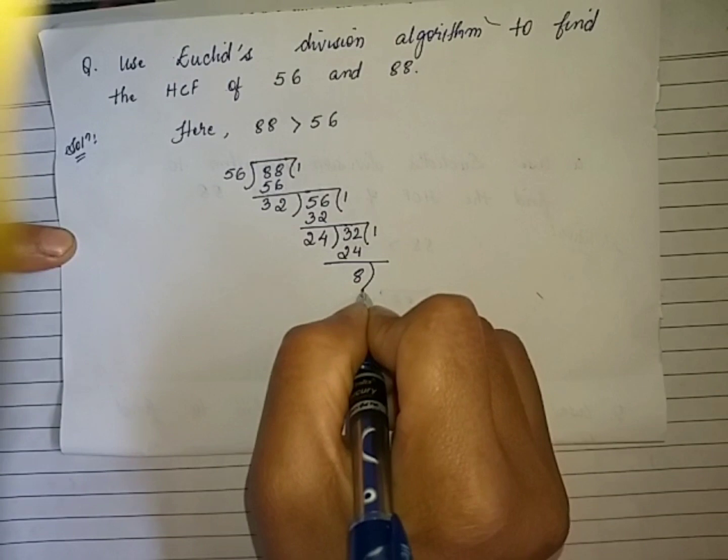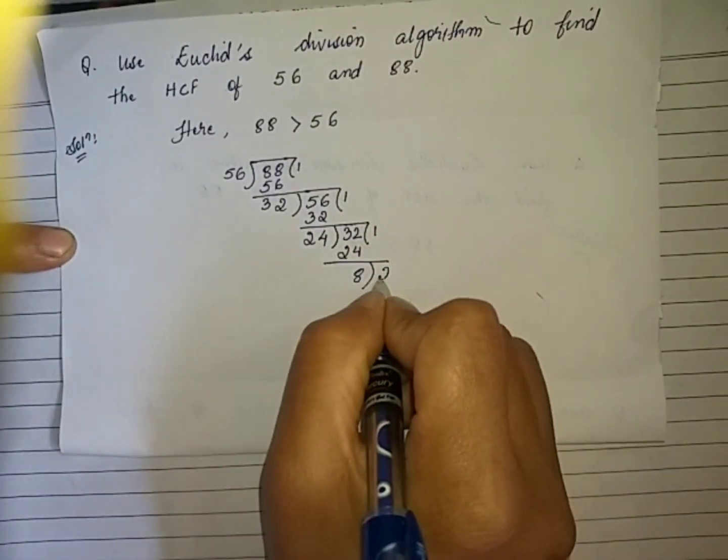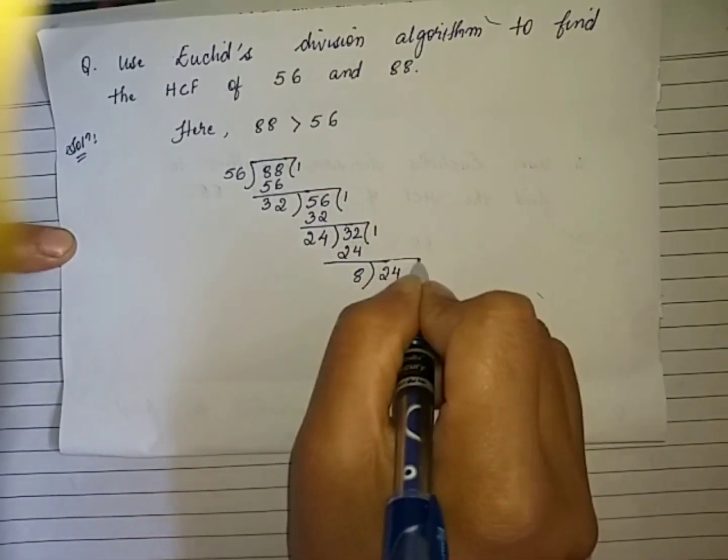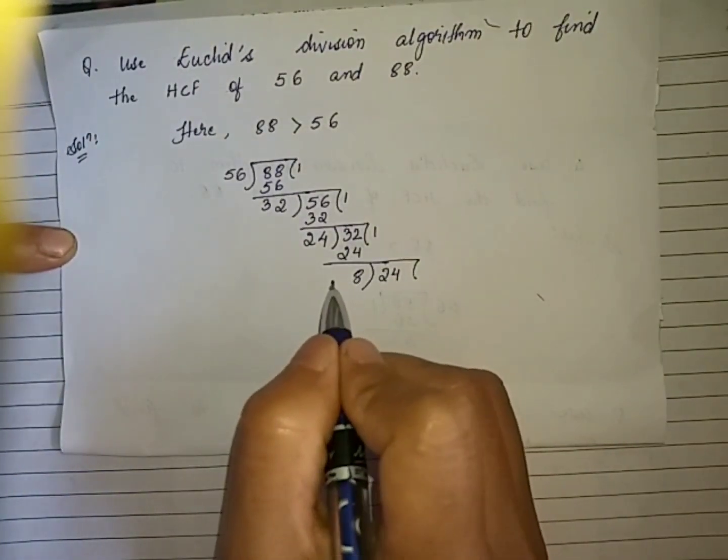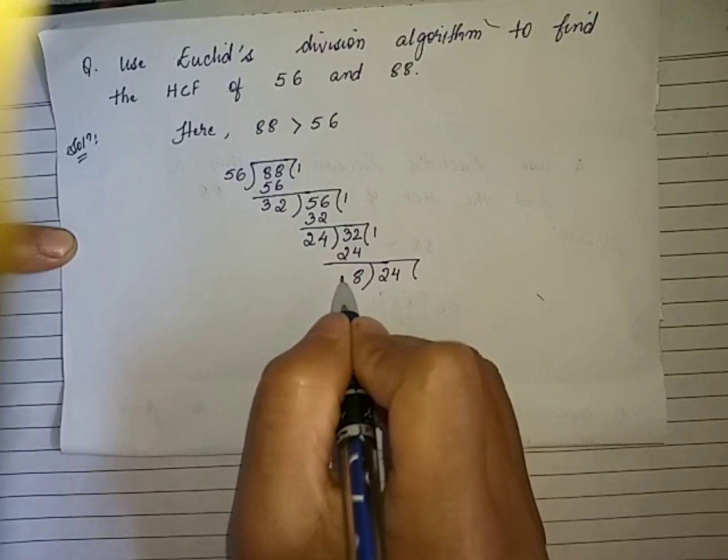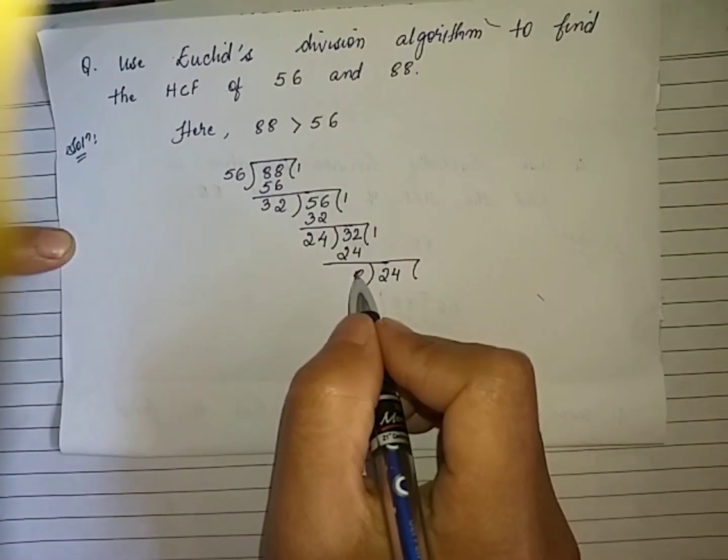Again, this 24 which is the last divisor will be the new dividend, and this 8 which is our last remainder will be our new divisor.